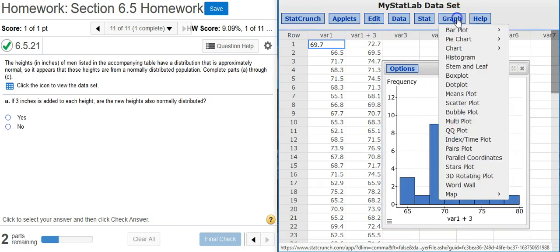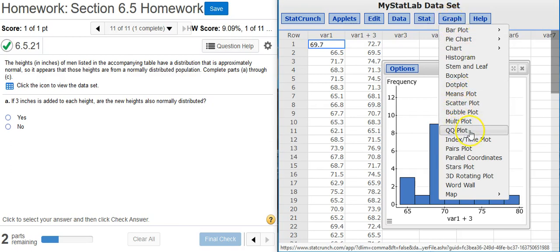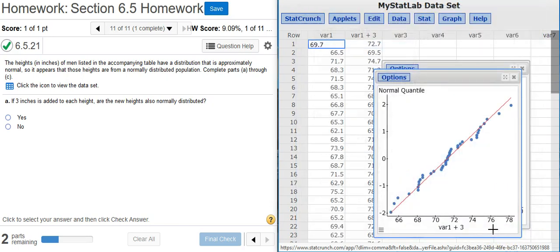But of course, the real definitive view of normality is with a normal quantile plot or QQ plot. So I go to Graph, QQ plot. Select my transformed data. Normal quantiles on the y-axis. Hit Compute. And yep, that's not looking too shabby there. So we're going to say, yep, we've still got a normally distributed data population.